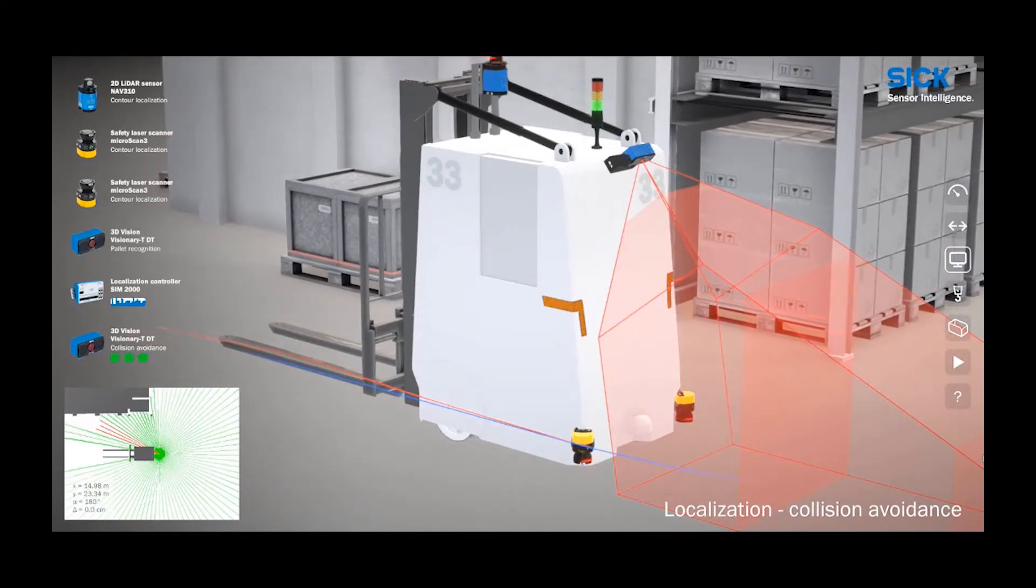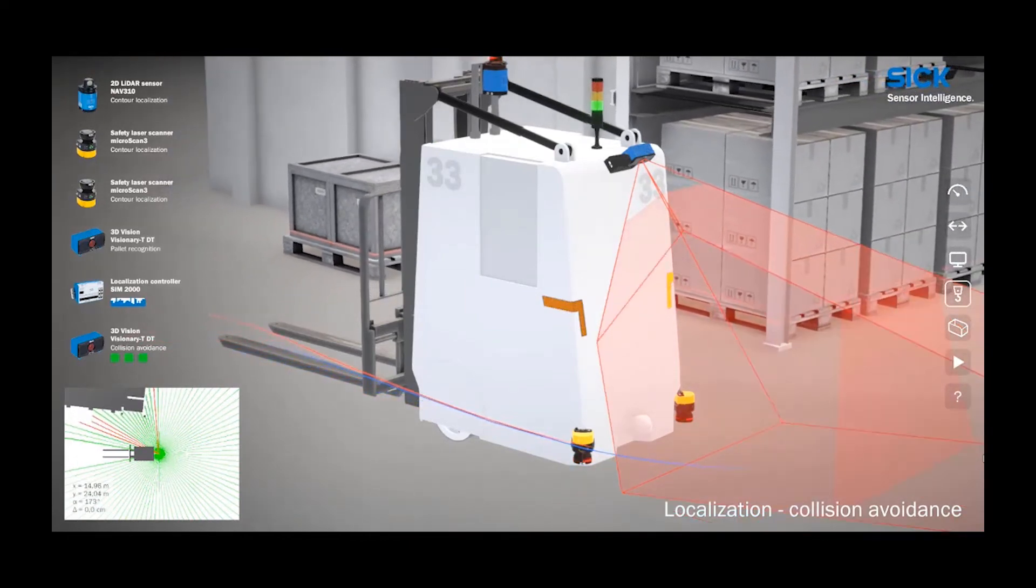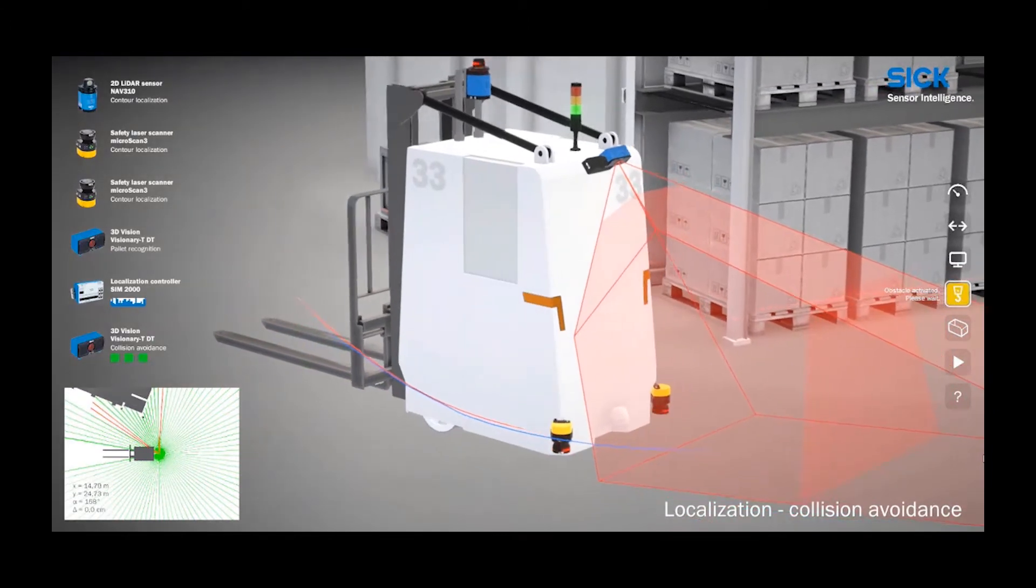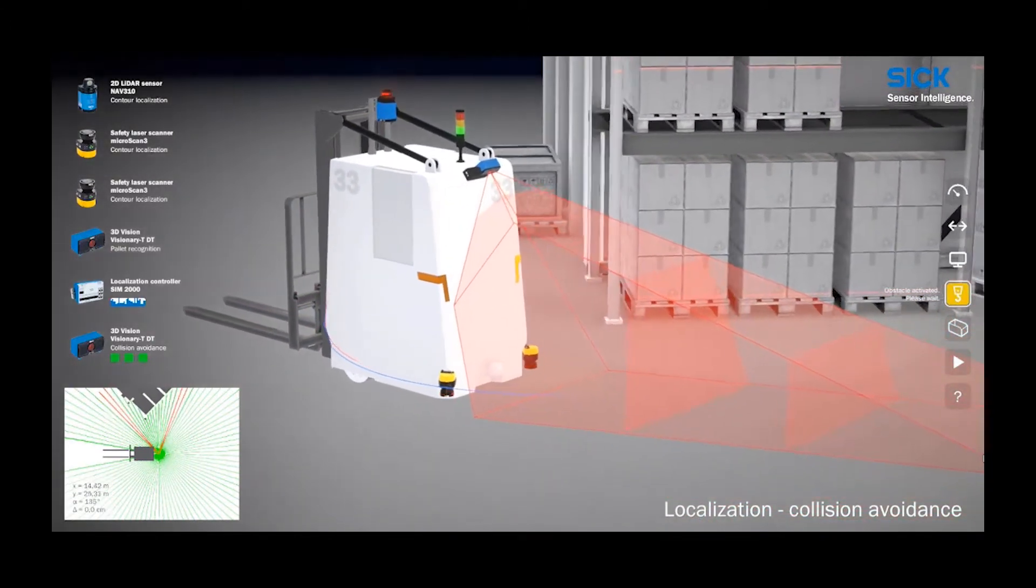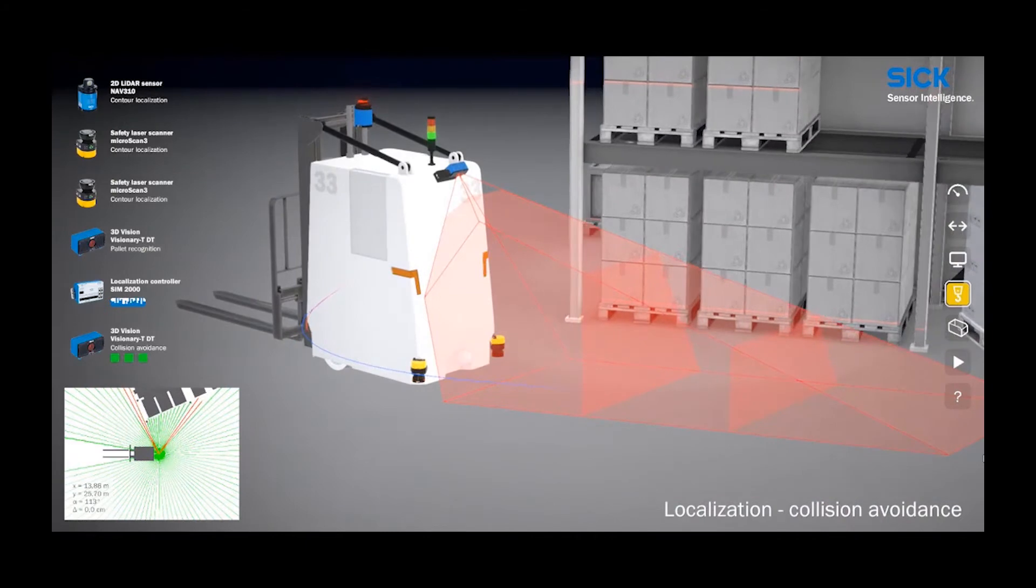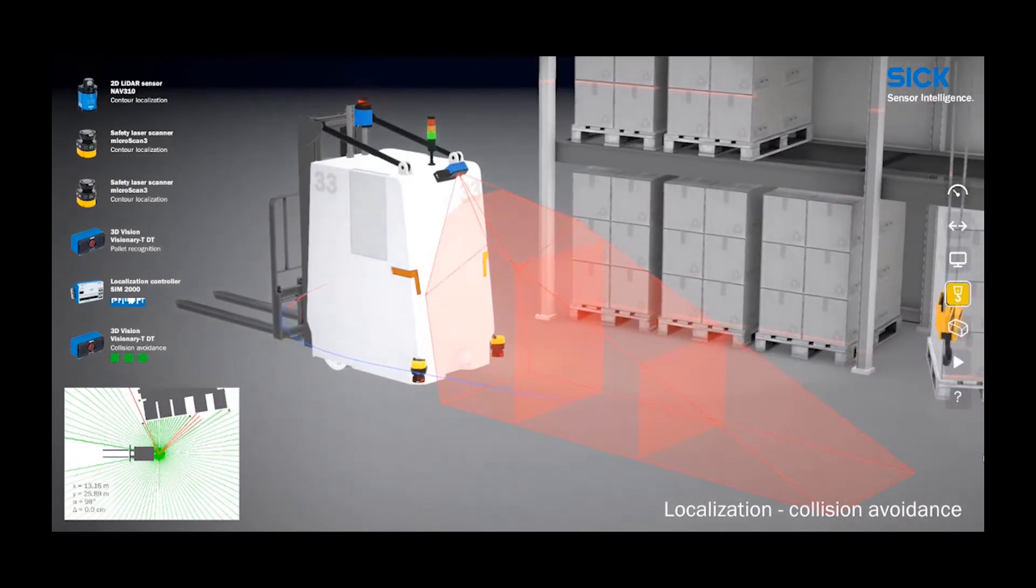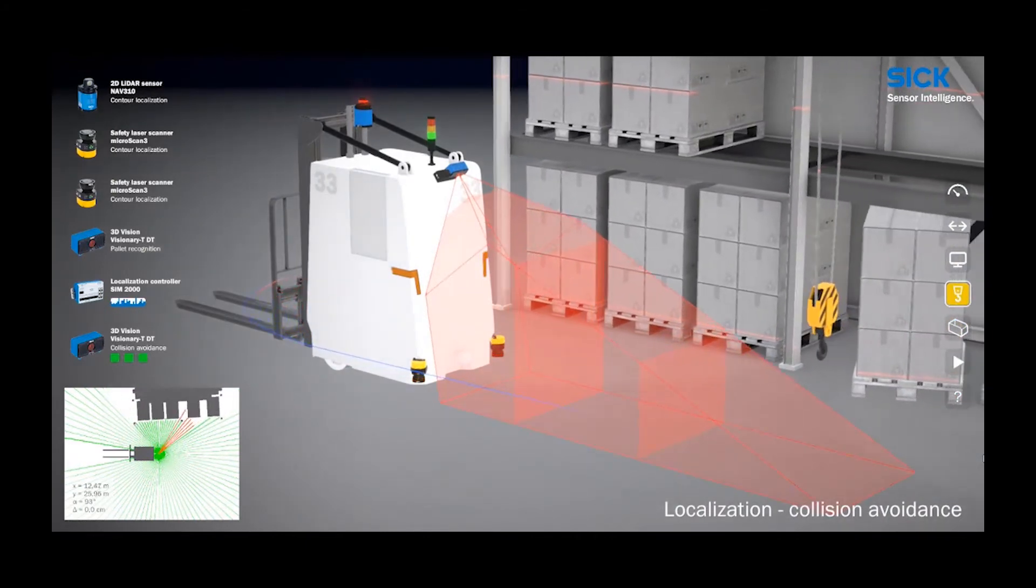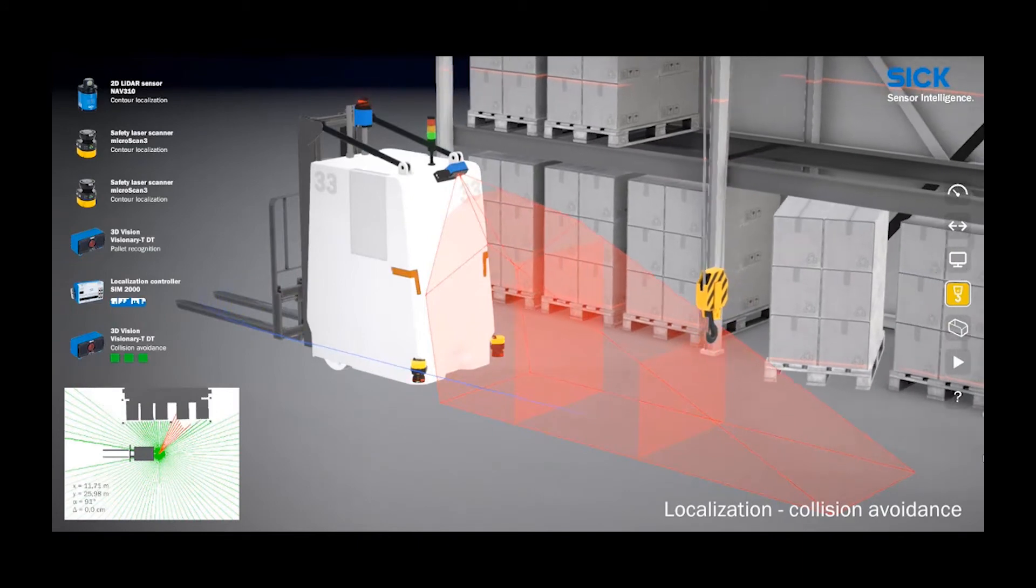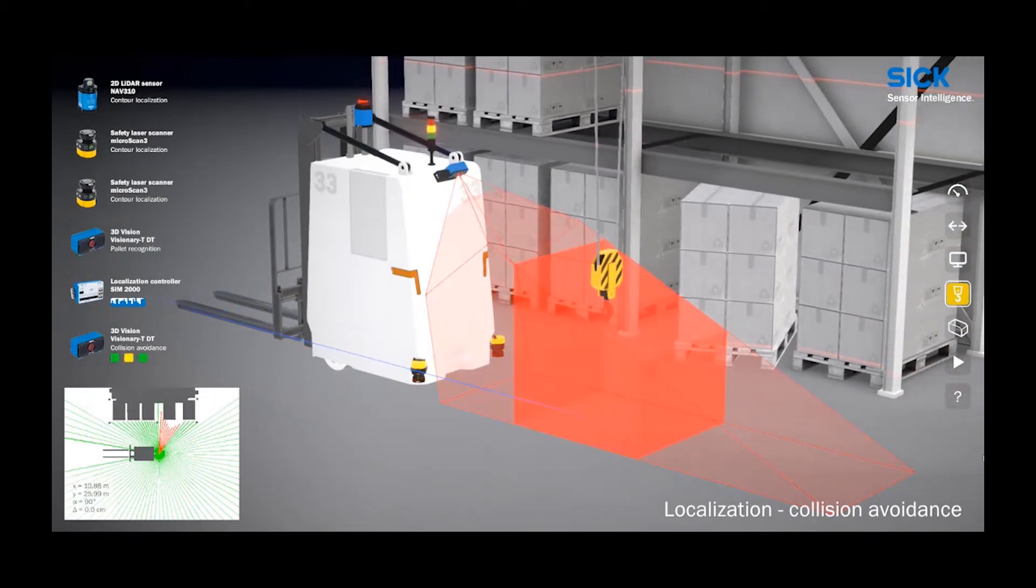The Visionary 3D camera evaluates the space above and around the safety scanners, looking for obstacles above the plane of the safety scanner's laser. The obstacles could be forks from other manned or unmanned vehicles, a part or tool jutting out from a shelf, or in this case, a hook from an overhead crane.